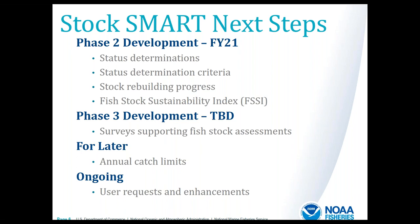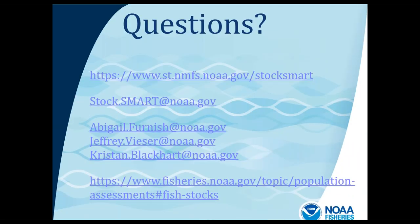Phase three — timing not yet determined — will explore adding information on surveys supporting fish stock assessments, developing charts, counts, and visualizations related to those surveys. Development under consideration for later phases includes annual catch limits and additional data as we continue to expand the Species Information System. Ongoing development throughout these phases will address user requests, enhance user experience, and improve data visualizations for existing datasets. General questions can be sent to StockSmart at NOAA.gov, and our contact emails are on the slide.